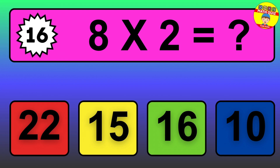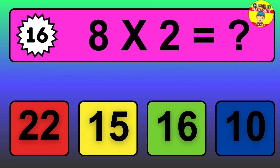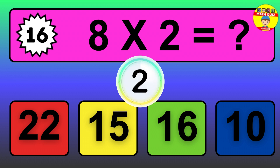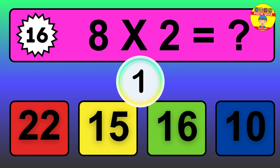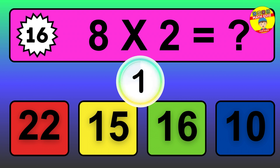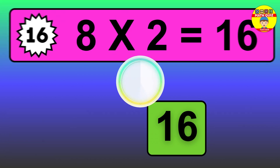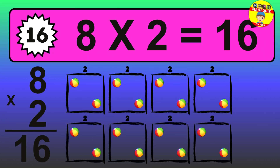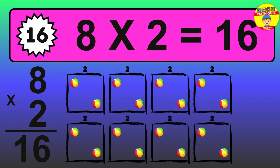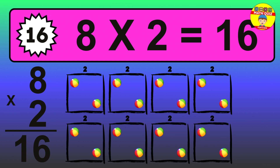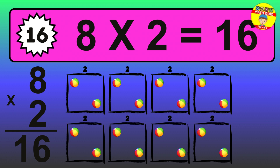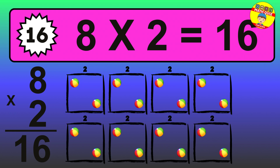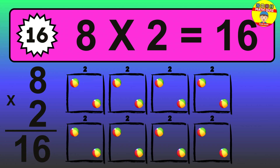Question 16. 8 times 8 equals what? The answer is 8 times 2 is 16. To calculate, we have 8 groups with 2 balls each one. So, how many balls do we have? 16 balls.